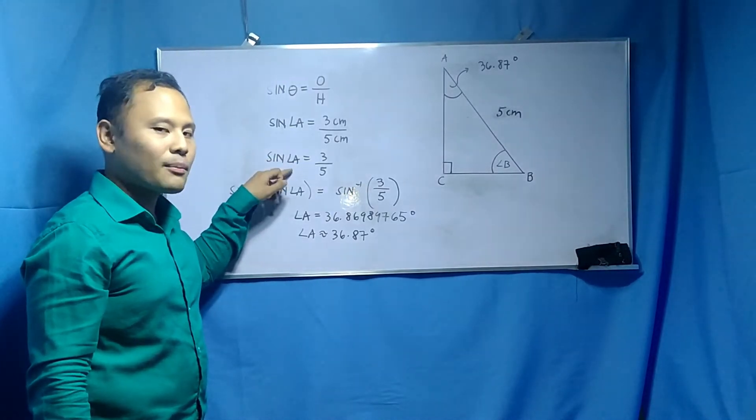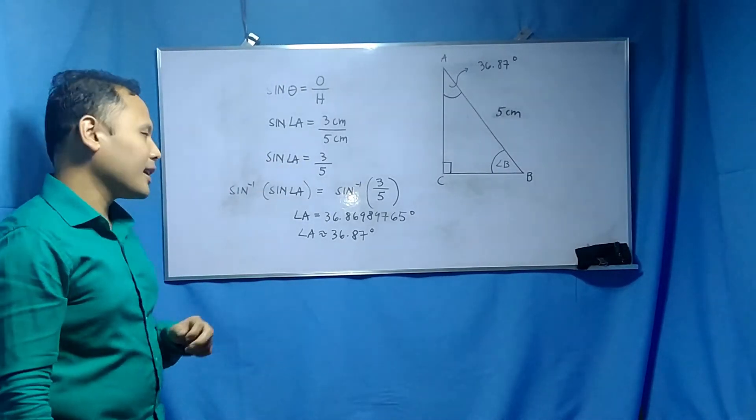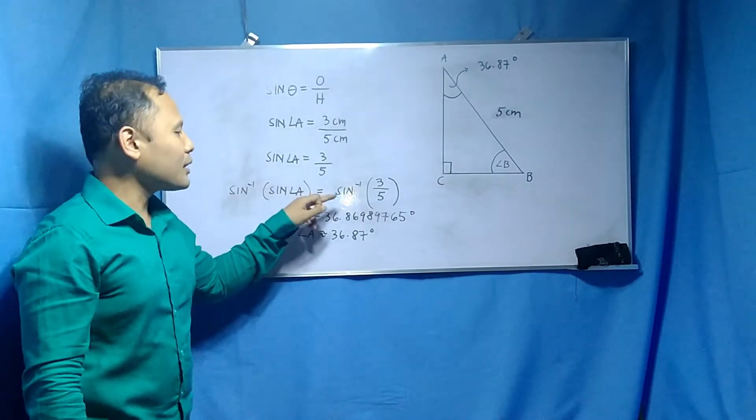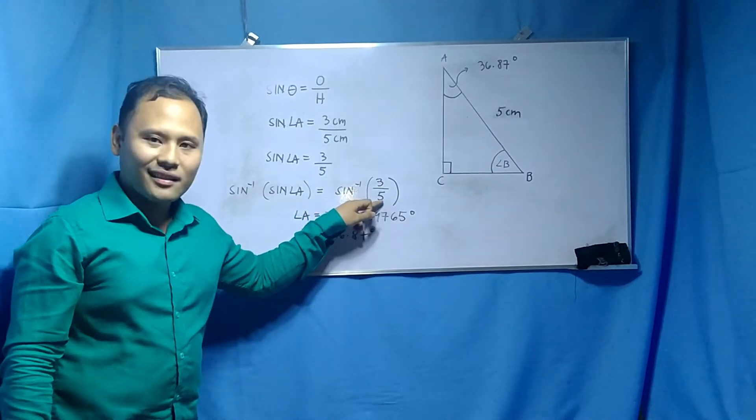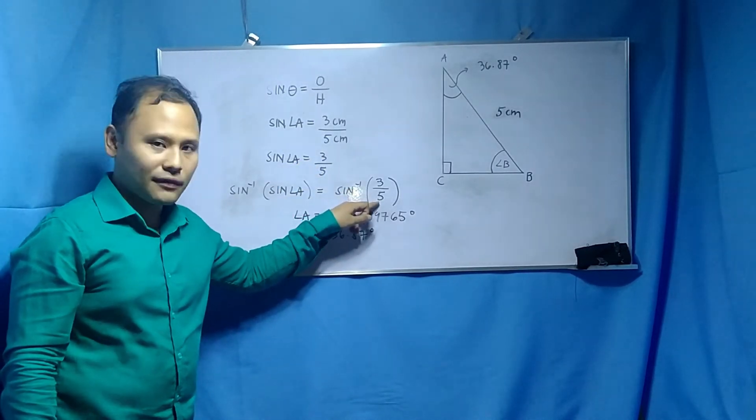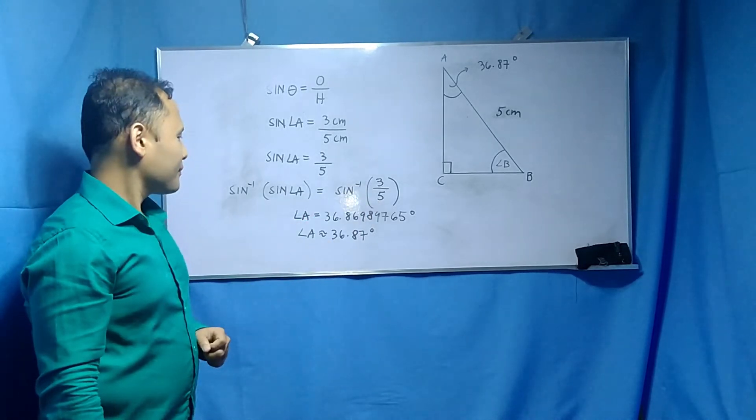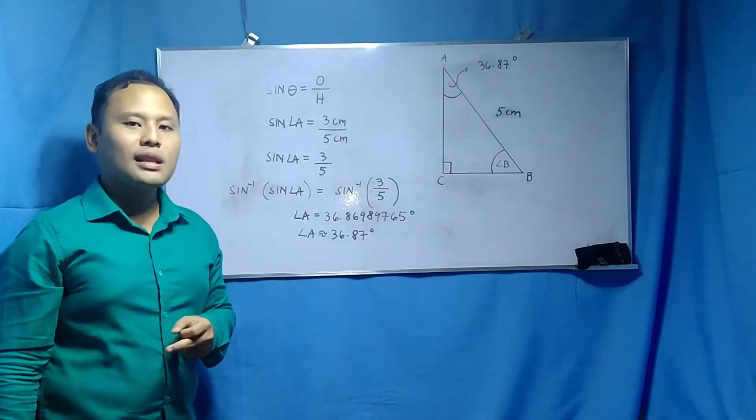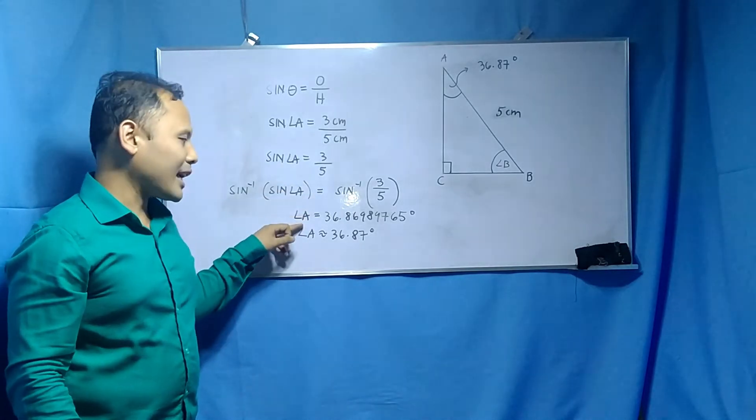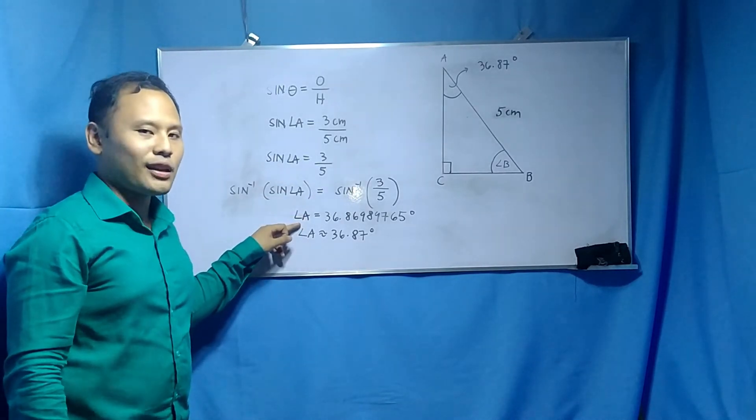Then, we have to cancel the label sin to solve for angle A. We can do that by applying the inverse sine function in the left-hand side. What you do in the left side will be done to the right side. So you also apply the inverse function to the fraction 3/5. And I will show you how to compute angle A using the scientific calculator.